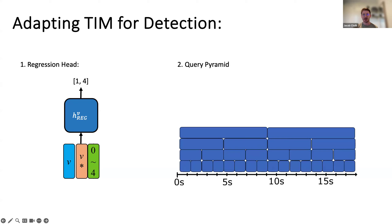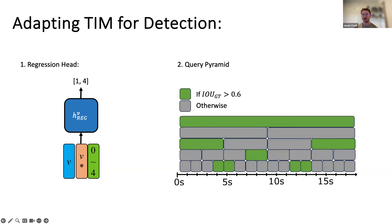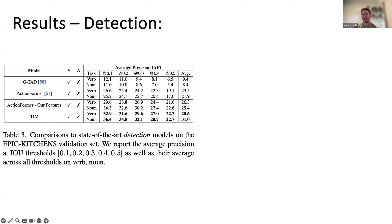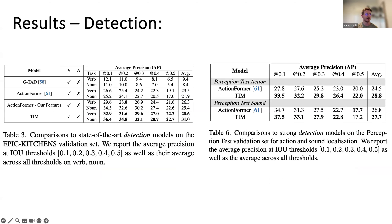In training, we take this query pyramid and label queries based on IoU with ground truth, allowing us to distinguish between overlapping actions of different sizes. Shorter queries with larger IoU regress to shorter actions, and longer queries regress to longer actions. This gives strong results — we outperform a baseline on EPIC Kitchens and the Perception Test even when using the same set of features.